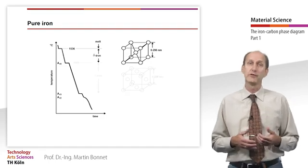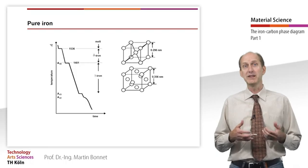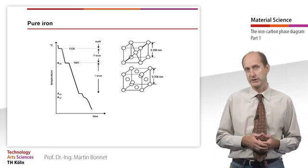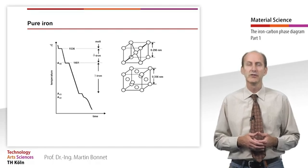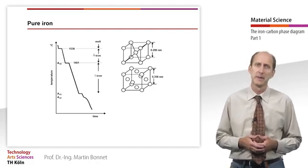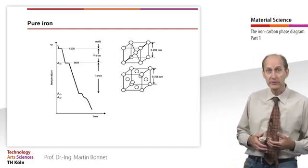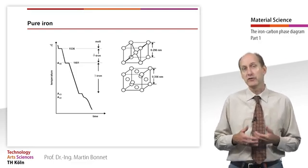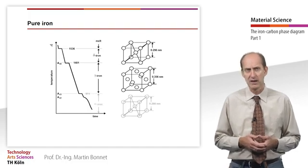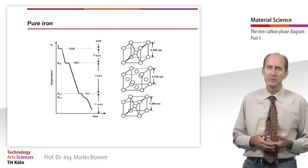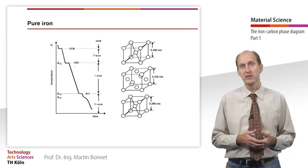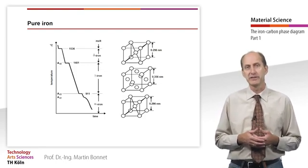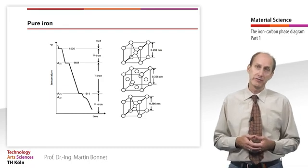At 1401 degrees Celsius, the more densely packed face-centered cubic lattice, the gamma iron, appears. Here the second arrest point occurs. Although it is not solidification that takes place, but an exothermic solid-solid transition. After further cooling, another lattice transition into a body-centered cubic structure, the alpha iron, takes place at 911 degrees Celsius.